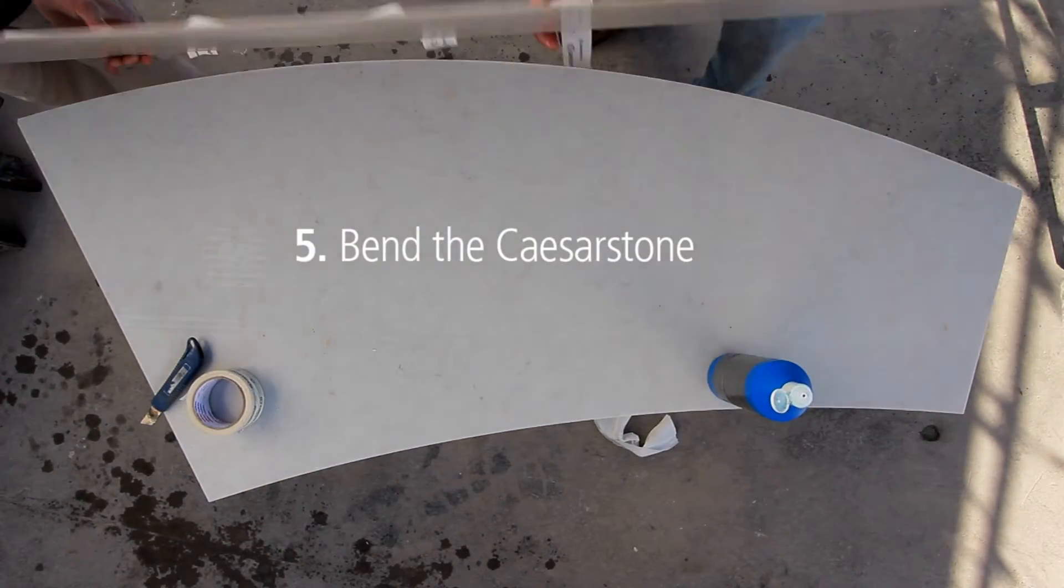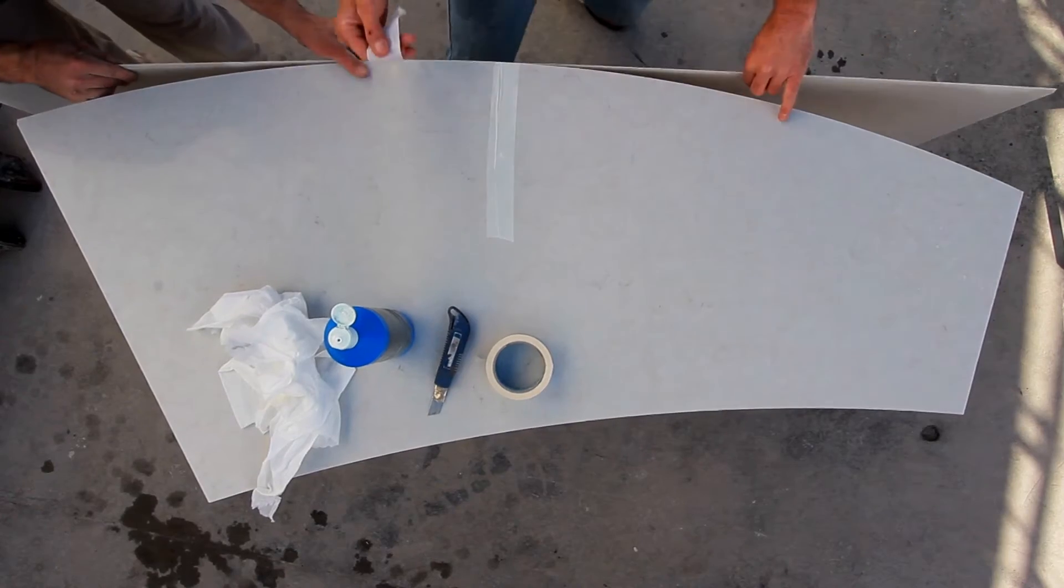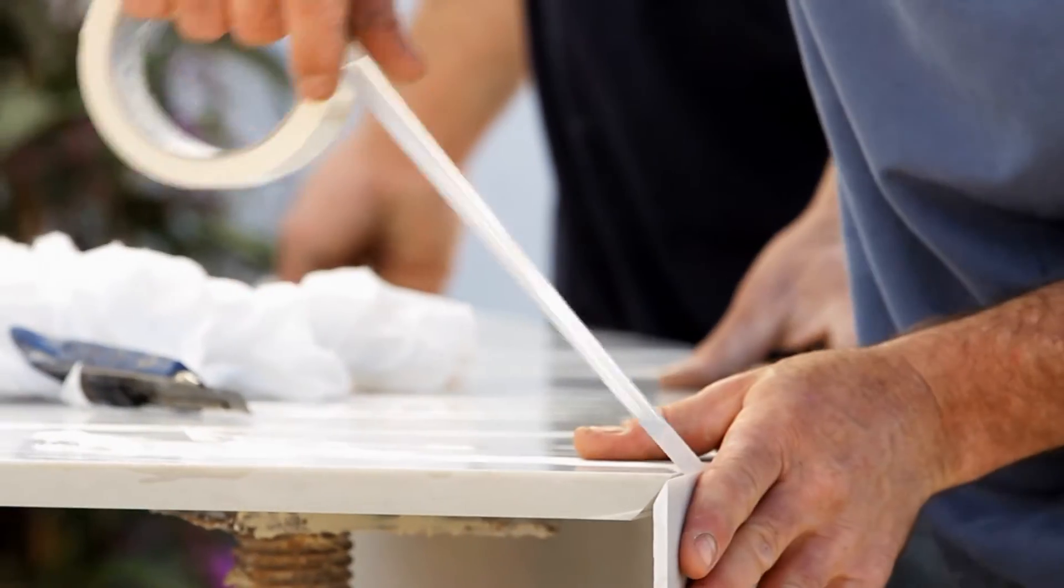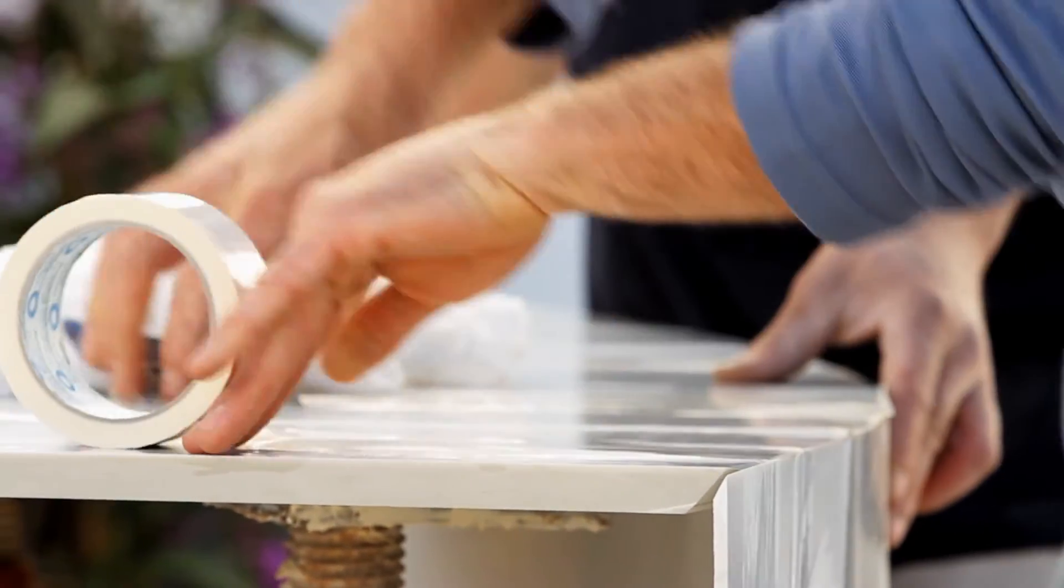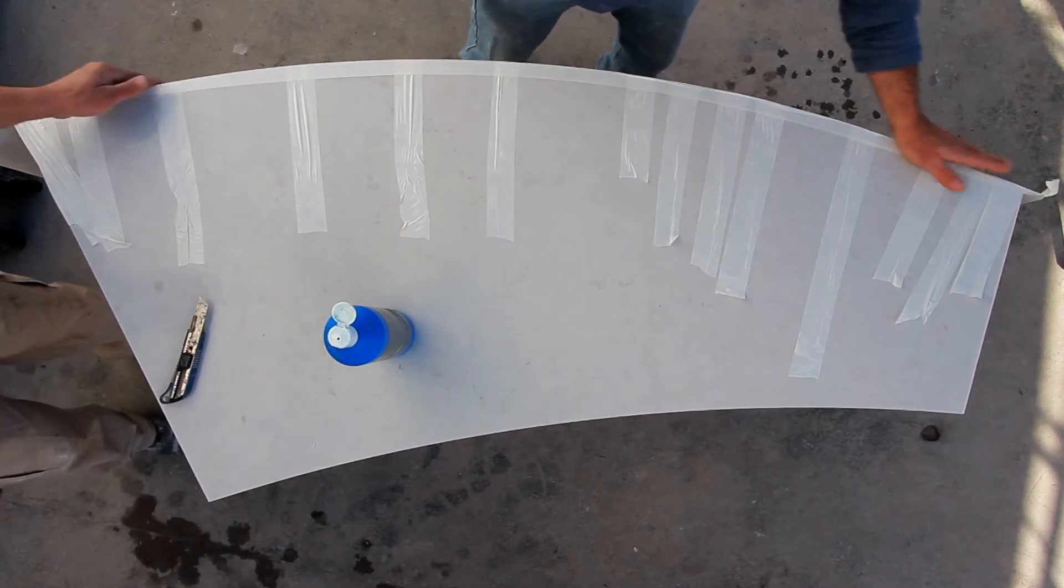Bend the scissor stone around the edge of the coffee table until it takes on the correct shape and secure it with the strips of tape. The scissor stone will cool down quickly, which means that you won't always manage to form the whole piece in one step. You may need to repeat the process of heating and forming to achieve the final shape.